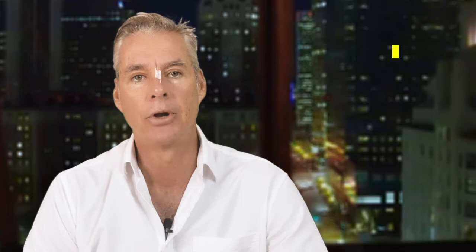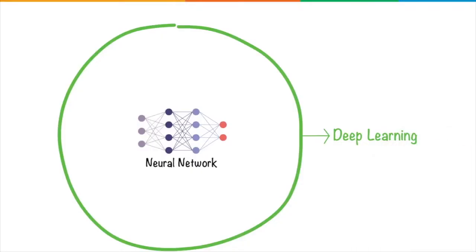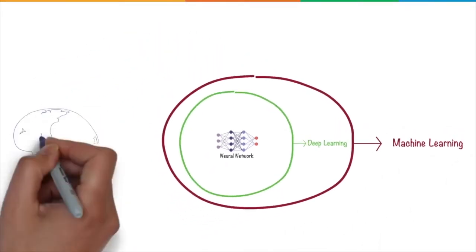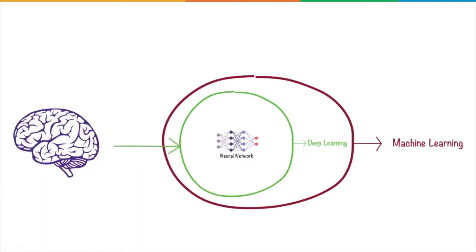Deep learning. The use of neural networks consisting of many layers of large numbers — millions of artificial neurons. Deep learning is perfect for projects involving huge, complex data sets. Expert system. A computer system that models the decision-making ability of a human expert. Expert systems are rule-based and normally use if-then statements.